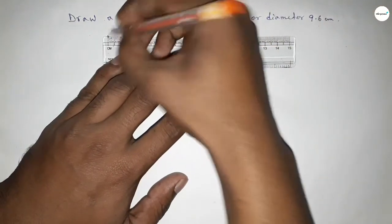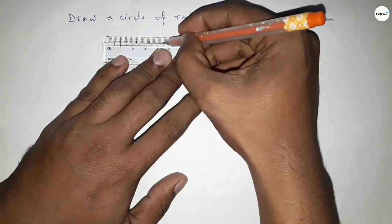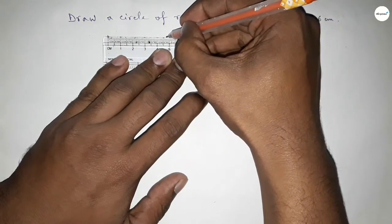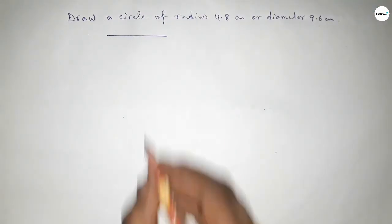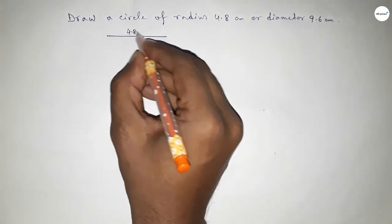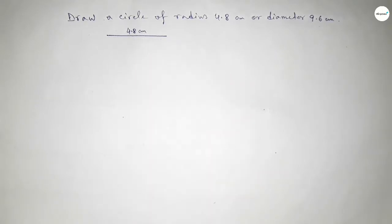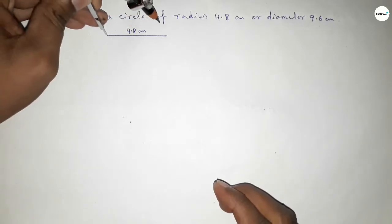So this is starting 0, 1, 2, 3, 4, 5, 6, 7, 8. We know that the radius of a circle is half of diameter, so this is 4.8 centimeter. Now taking here a point, next taking the length.